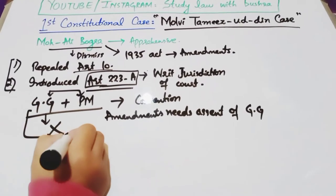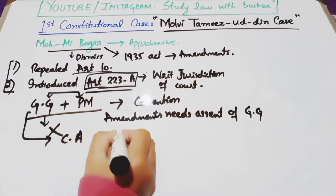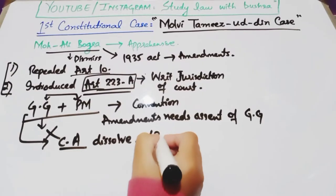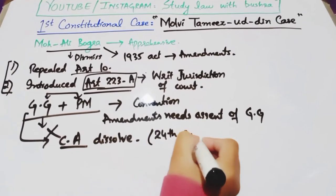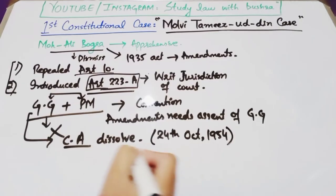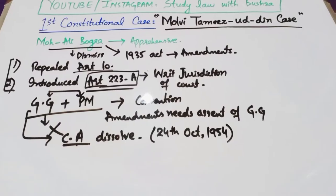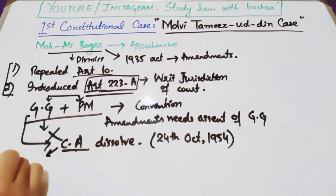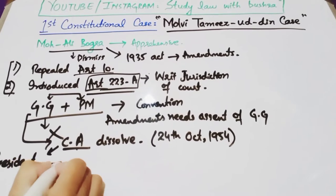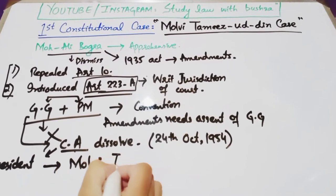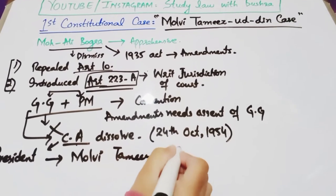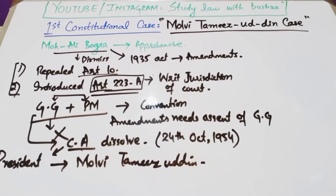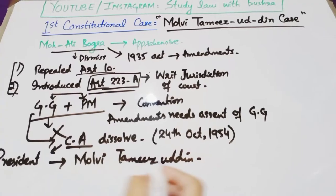ان اختلافات کی وجہ سے governor general ملک غلام محمد نے constituent assembly کو ہی dissolve کر دیا — 24 اکتوبر 1954 کو first constituent assembly کی dissolution ہوئی، جس کا basic task یہ تھا کہ وہ country کے لیے constitution frame کرے۔ مولوی تمیز الدین اس first constituent assembly کے president تھے۔